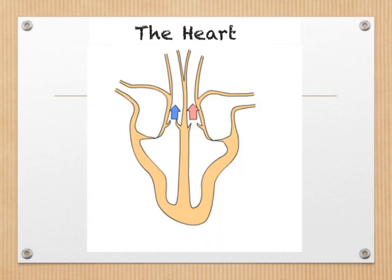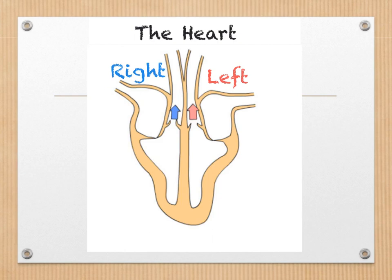Before we look at ECG in more detail, we first need to be able to identify the parts of the heart. The heart has two sides: the right hand side and the left hand side. When you are labelling a heart, remember that the right and left are the opposite way round to the way you are looking at the diagram. This means that the right hand side of the heart will carry the deoxygenated blood, whereas the left hand side will carry the oxygenated blood.